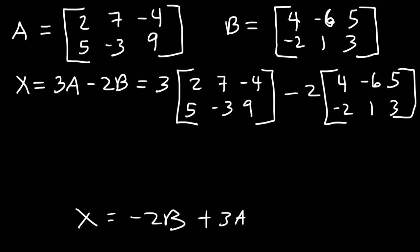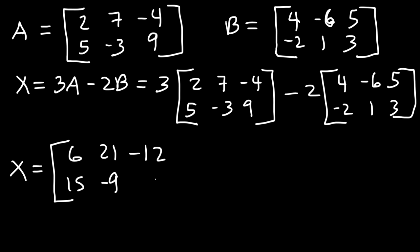So let's perform the operation. Let's multiply matrix A by 3. So this is going to be 6, 21, -12, 15, -9, and 27, if we triple the value of every element in that matrix.